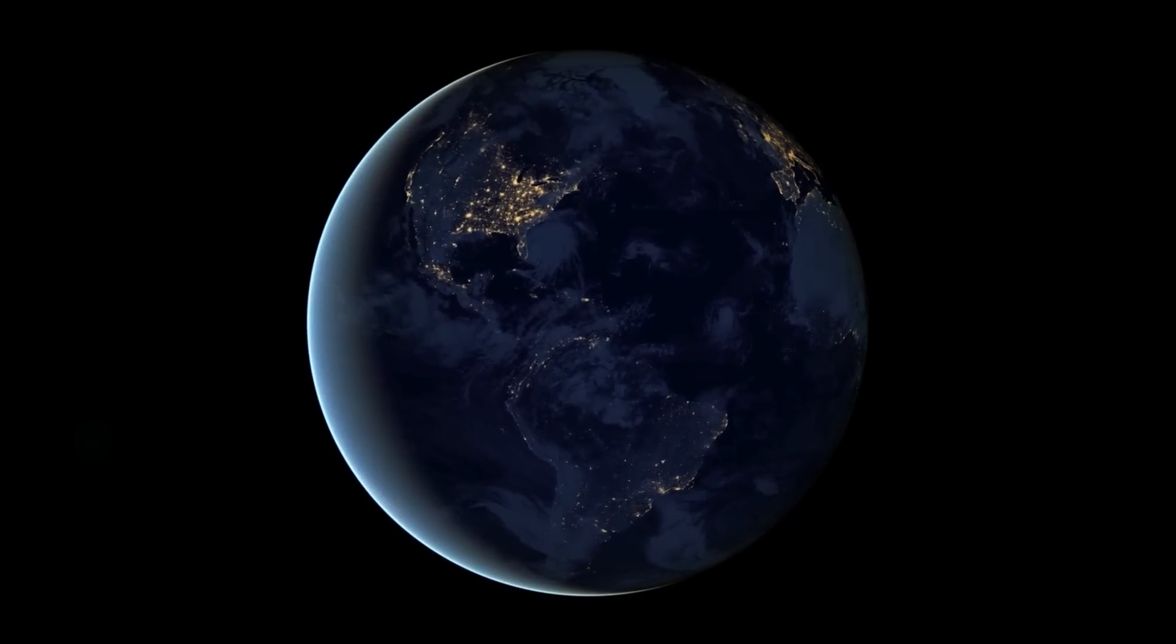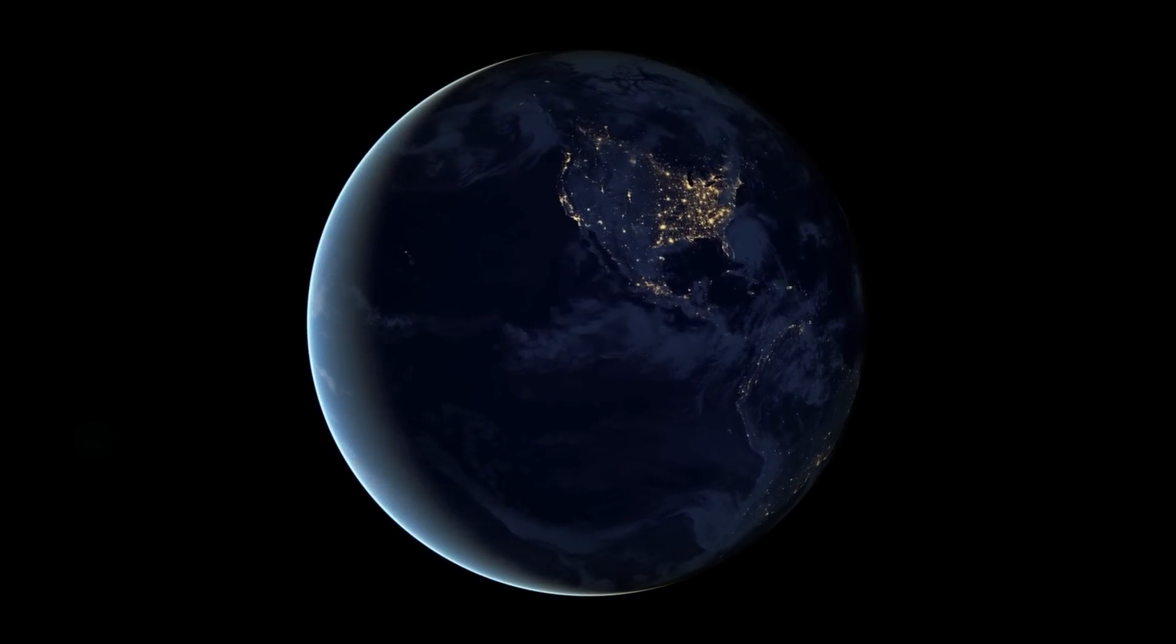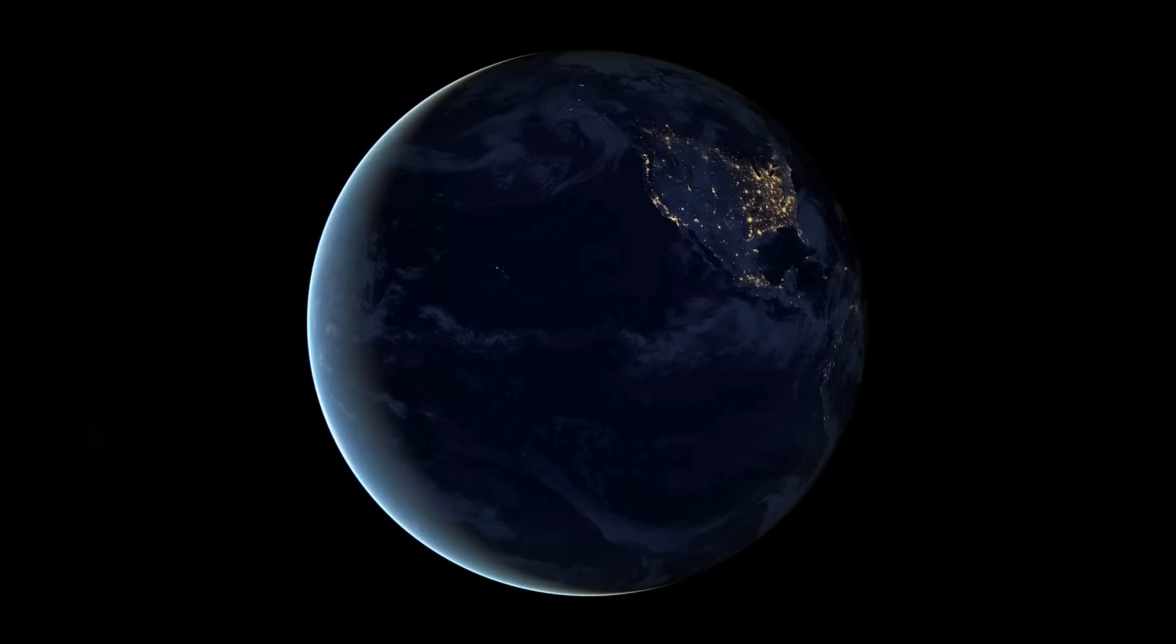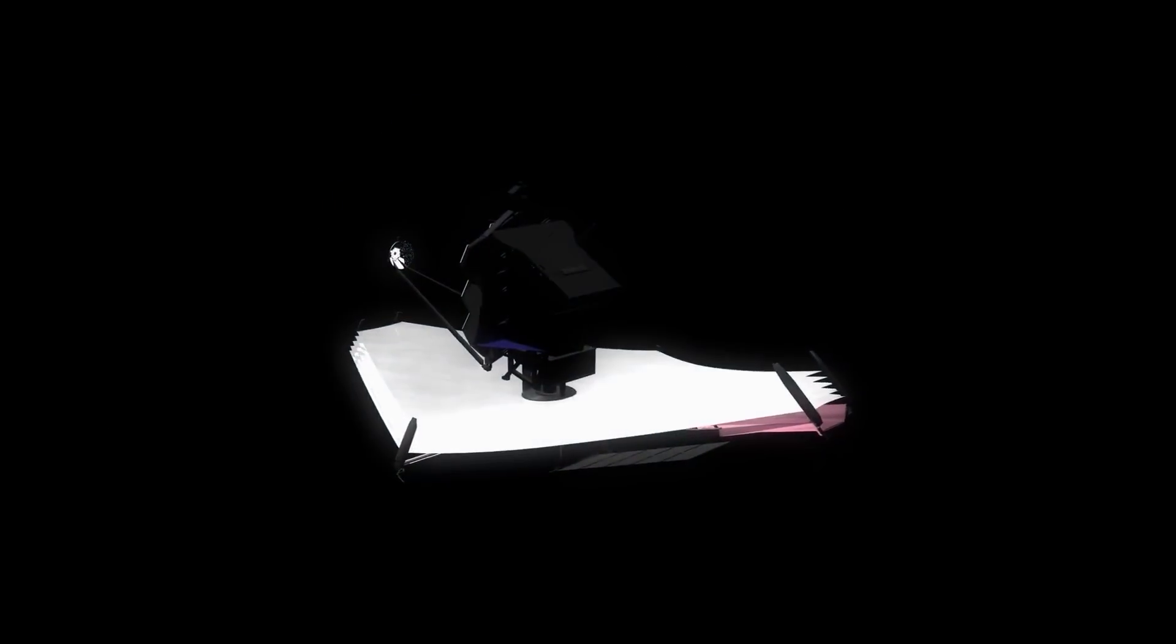An exoplanet must have a similar composition to Earth's atmosphere in terms of gases such as methane, oxygen, water vapor, carbon dioxide, and a slew of others to be considered habitable.